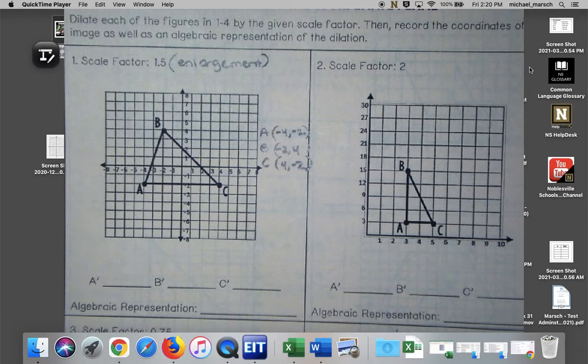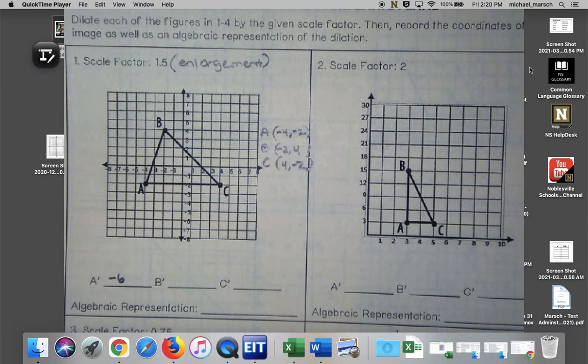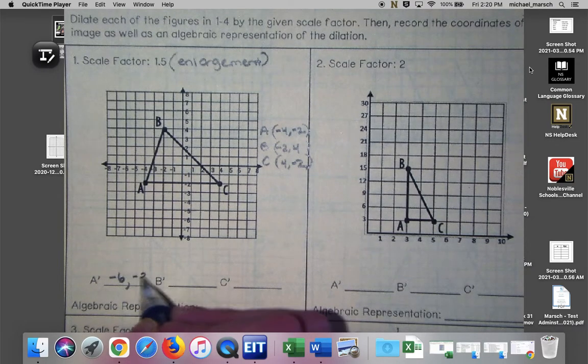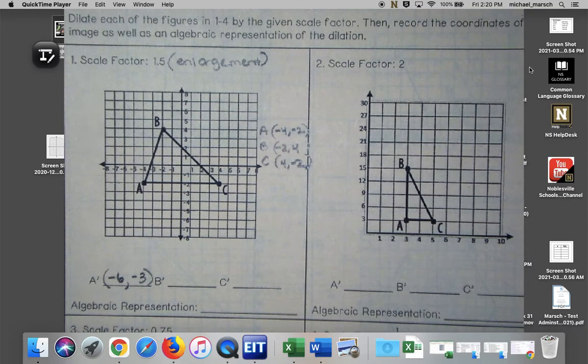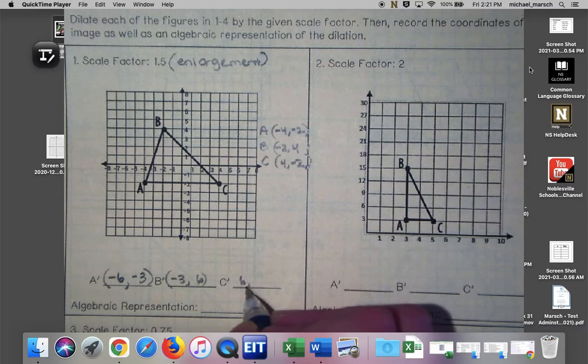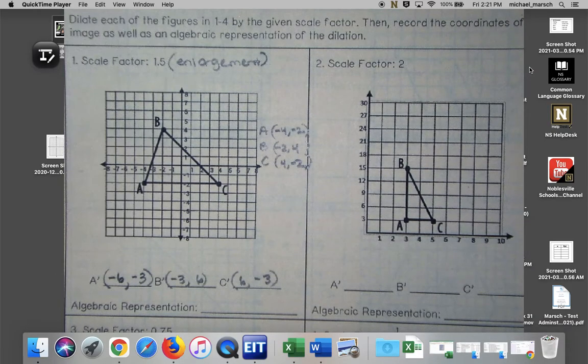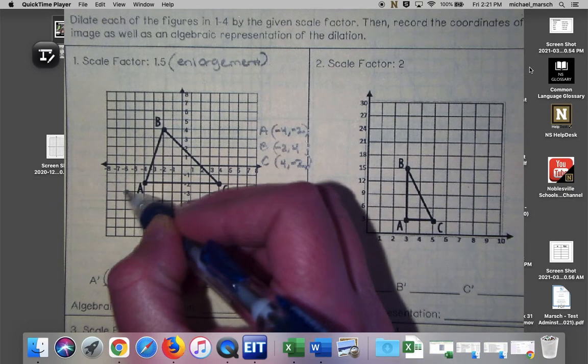Lots of fours and twos. And then I'm going to use my calculator and I'm going to multiply each of those values by 1.5 and that's going to give me my new ordered pairs. So what's negative 4 times 1.5? Negative 6. What's negative 2 times 1.5? Negative 3. So I'm taking each coordinate and I'm multiplying it by the scale factor to get my new ordered pairs. This is going to be negative 3, 6 and this is going to be 6 negative 3. I know that just because all I have is twos and fours so I already know the new value. Now I'm going to actually plot those so negative 6 negative 3 gives me A prime.